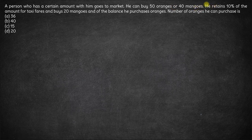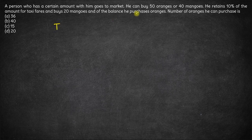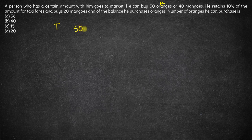So let's say the total amount with him is T rupees. The cost of one orange is O rupees, so the cost of 50 oranges will be 50 into O. The total amount must be equal to 50O.